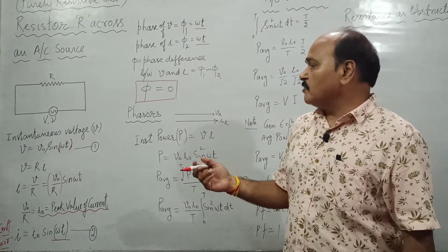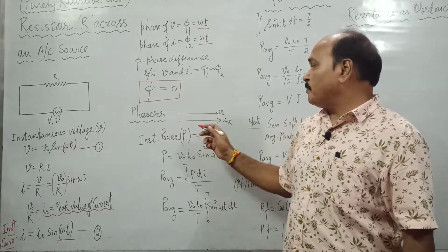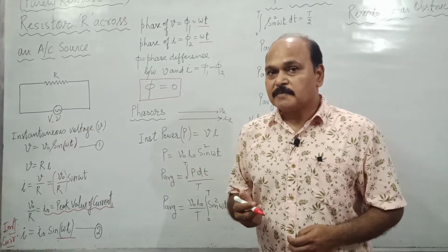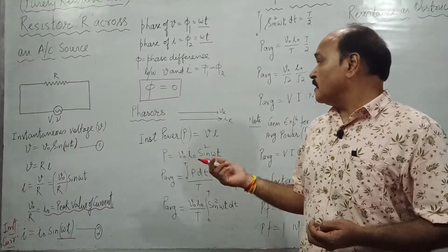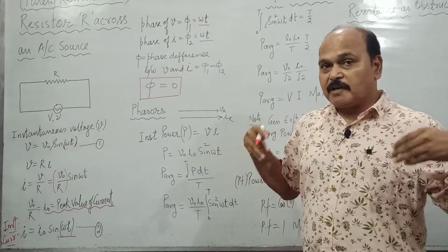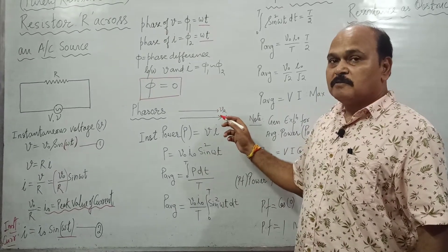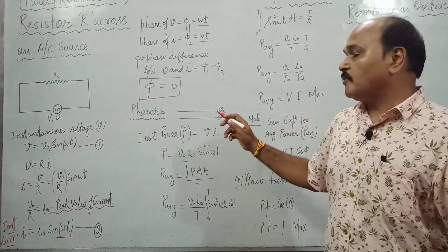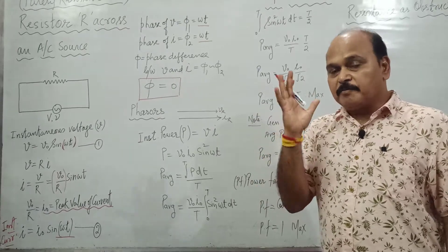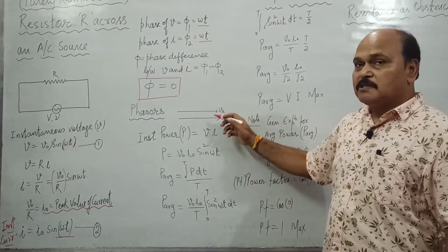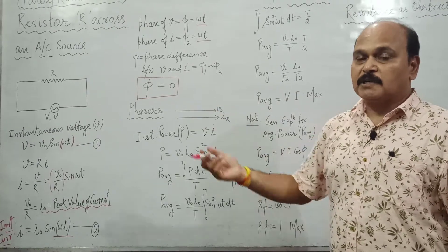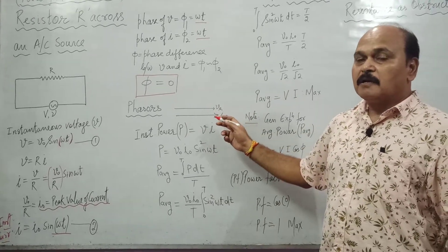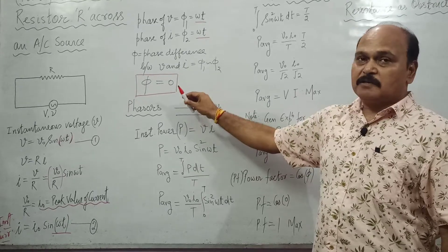We are going to represent voltage and current with the help of arrows. Arrows are exclusively reserved for vector quantities, but here we are representing voltage and current — both scalar quantities — by arrows, so we do not call them vectors; we call them phasors. These arrow-like representations for current and voltage are always made on the basis of phase difference between the two quantities. Here the phase difference is zero, therefore both arrows are parallel. Had the voltage been leading over current by a certain phase, the voltage phasor would be drawn at that angle in the anti-clockwise direction.